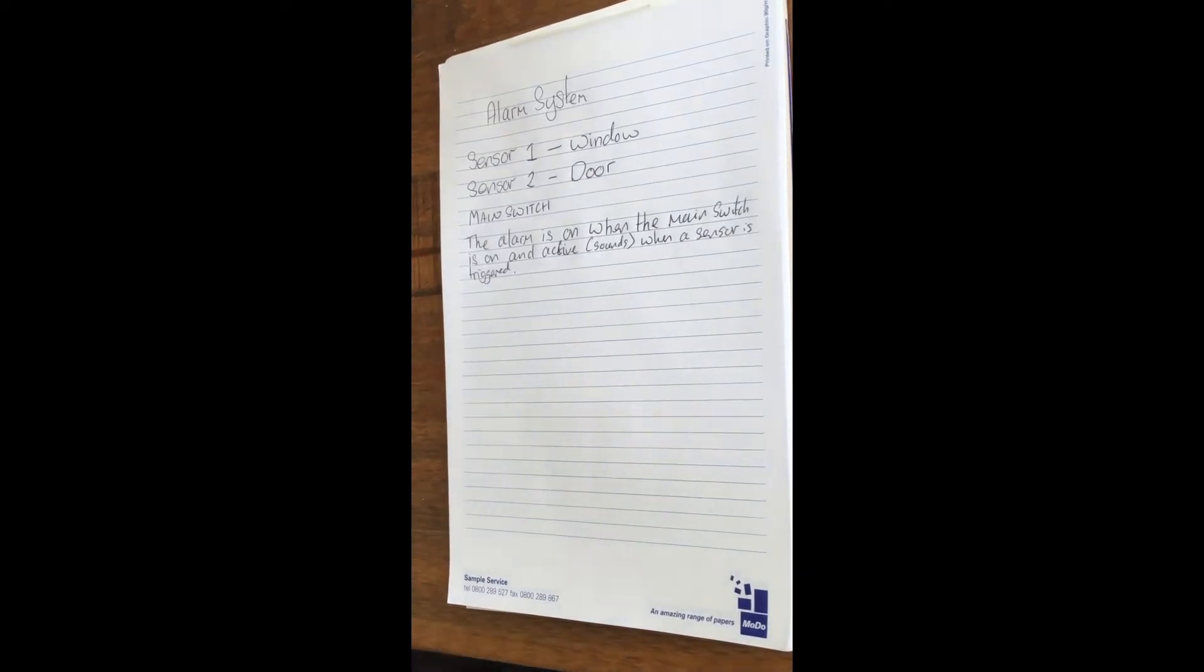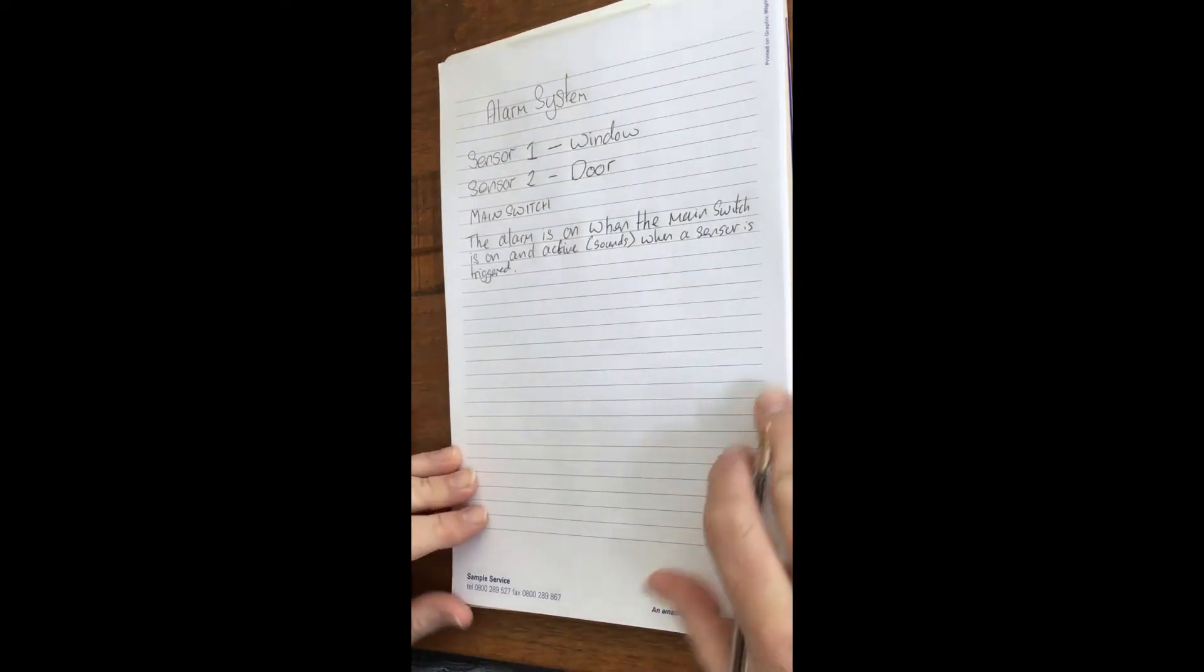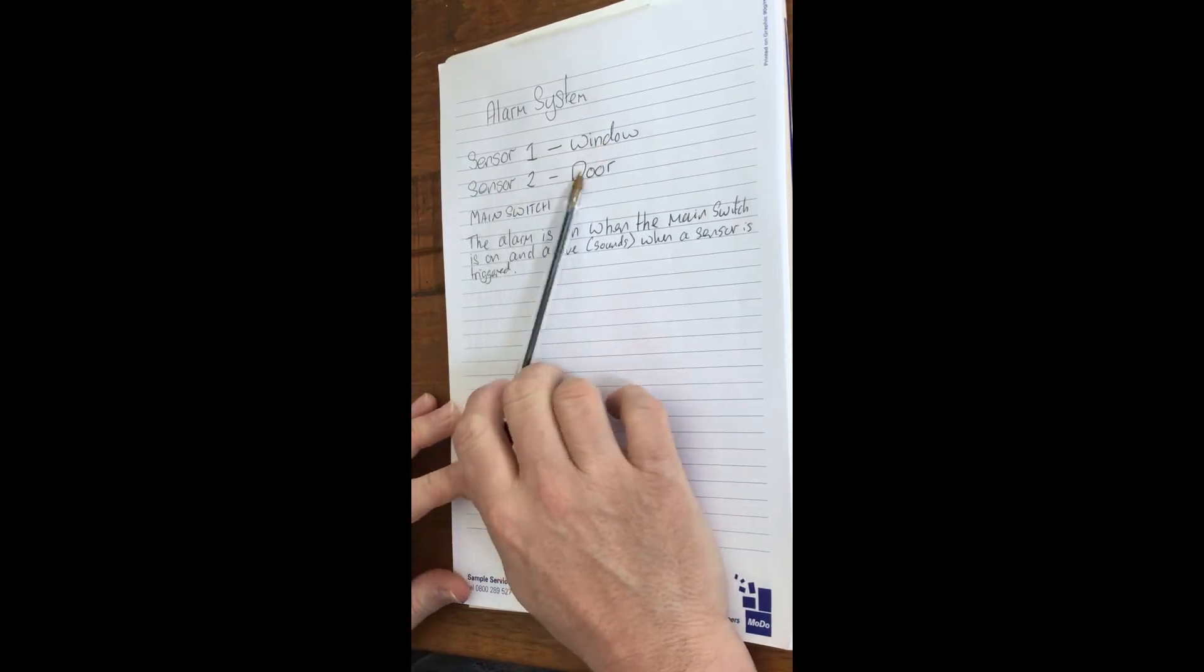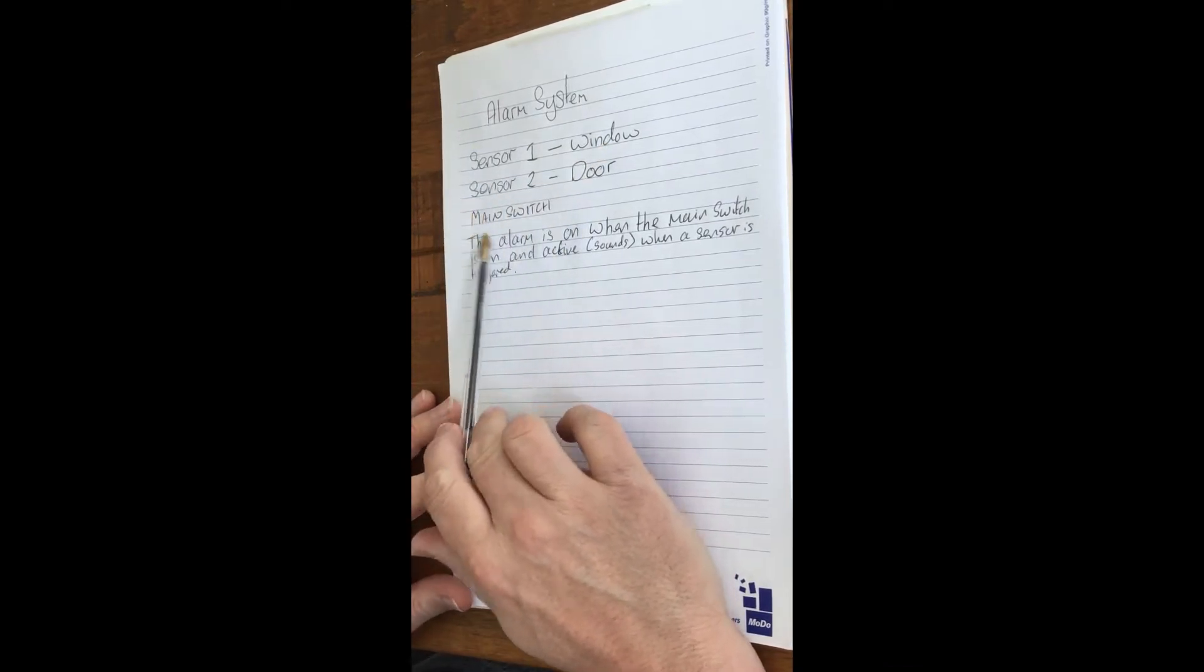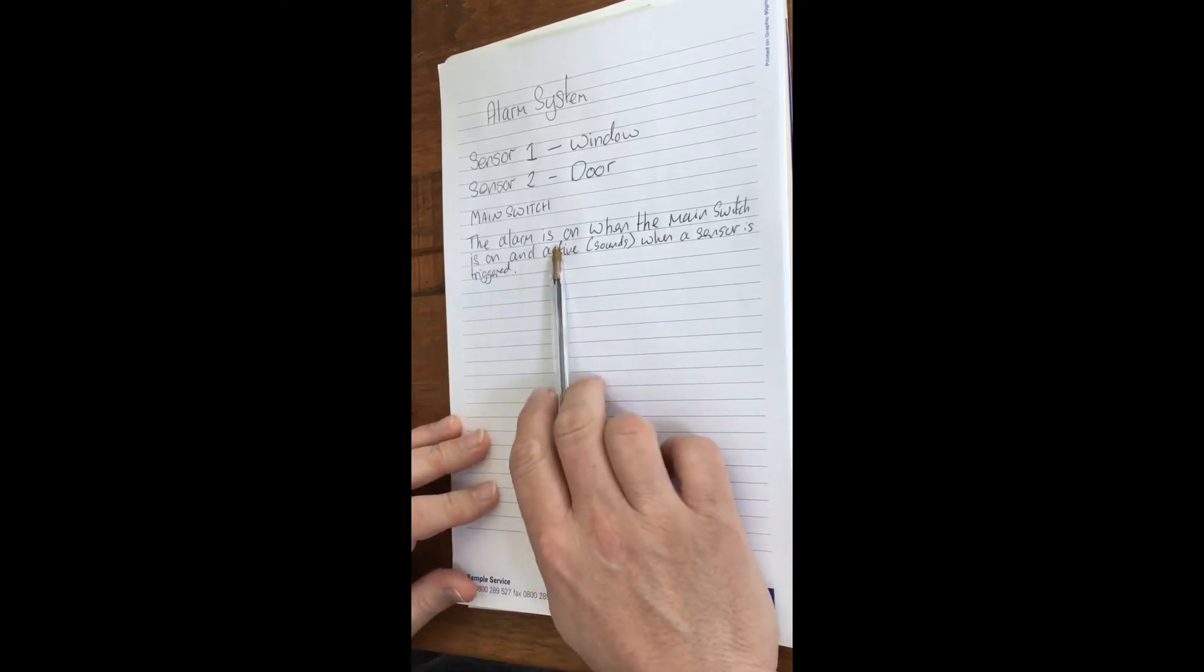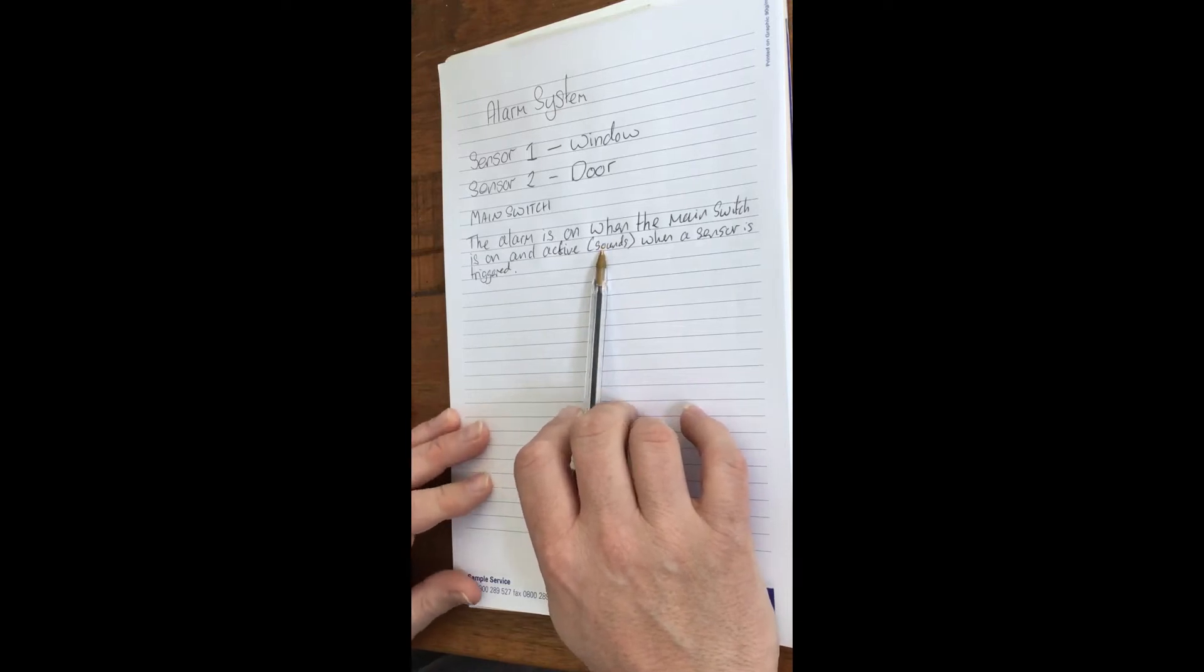Today we're going to look at an alarm system. In this case, we've got two sensors, one for a window and one for a door, and there's also a main switch that we can switch on or off. The alarm's only active when the main switch is on, and it only sounds when the main switch is on and either the window or the door sensor has been activated.